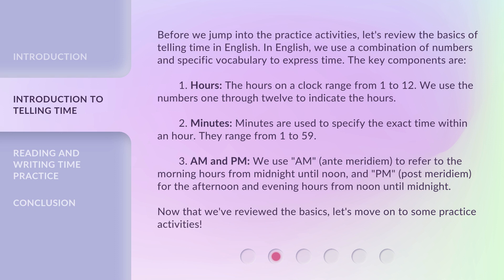2. Minutes. Minutes are used to specify the exact time within an hour. They range from 1 to 59. 3. A.M. and P.M. We use A.M., ante-meridiem, to refer to the morning hours from midnight until noon. And P.M., post-meridiem, for the afternoon and evening hours from noon until midnight.